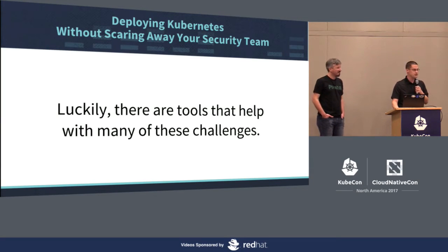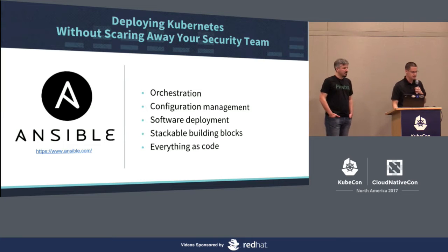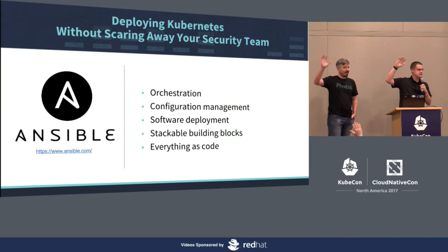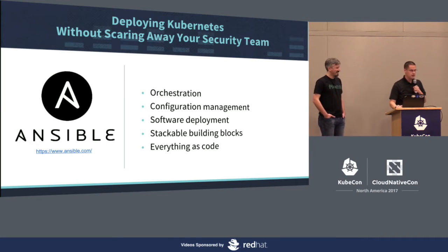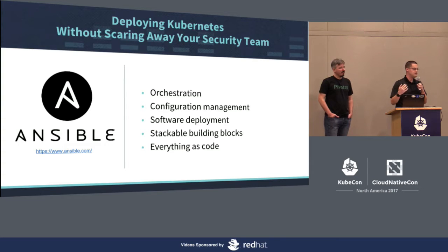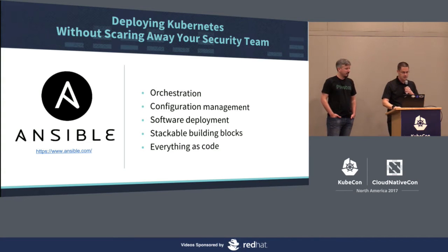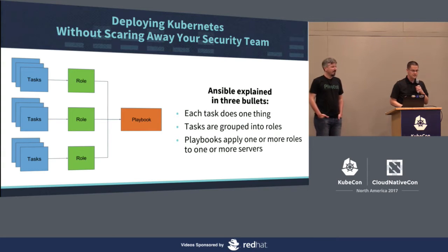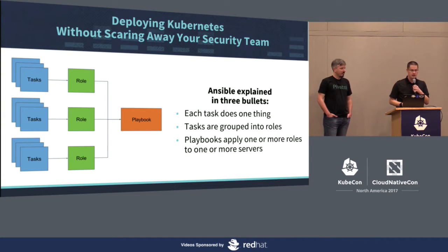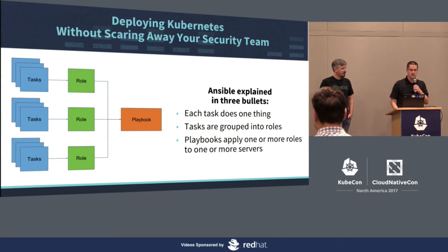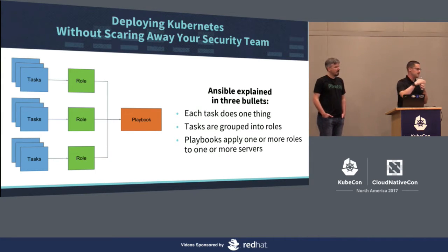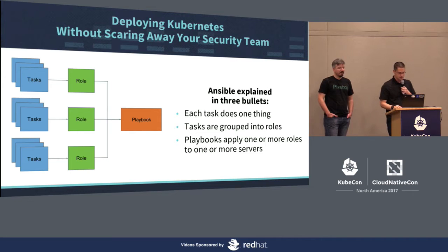Luckily there are a lot of tools that can help with these challenges. One that we both use regularly is Ansible. Ansible does everything from deploying software, restarting services, installing packages, running commands, and changing config files. In three bullets: you have tasks that each do one thing — maybe change a config file, restart a service, clone something from Git. You group tasks into a role, like a web server role with its set of tasks. Then you write a playbook that deploys your web servers, database servers, and so on, grouping those roles together.